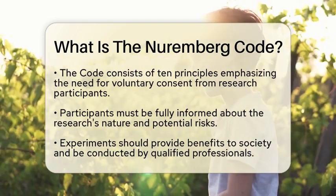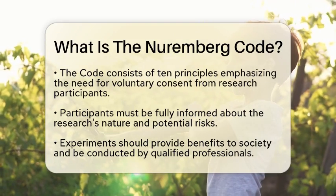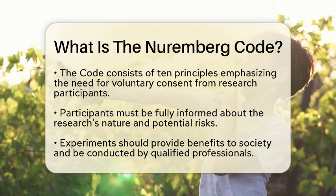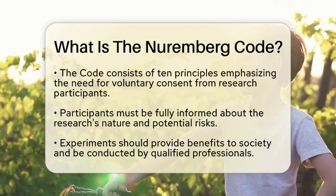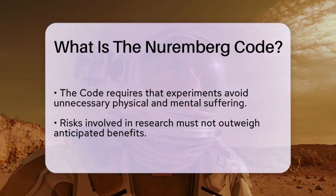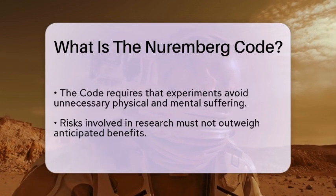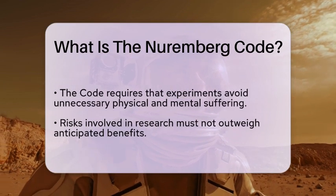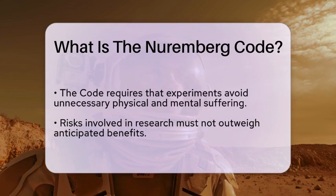The Nuremberg Code consists of ten principles that emphasize the necessity of voluntary consent from participants in medical research. It asserts that individuals must be fully informed about the nature of the research and any potential risks involved. Furthermore, the Code mandates that experiments should yield fruitful results for the good of society, and that they should be conducted by qualified individuals.